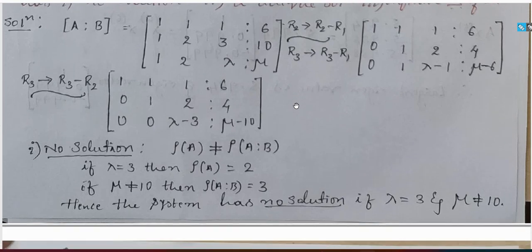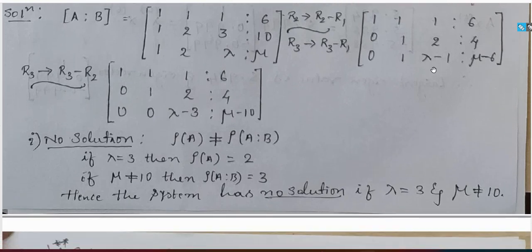For a unique solution, rank A should equal the rank of the augmented matrix. Lambda should not be equal to 3 — at least lambda should not equal 3. Then rank A equals 3 and rank of the augmented matrix also equals 3, and therefore we have a unique solution.